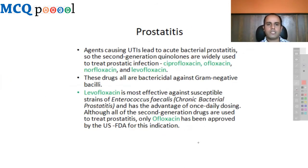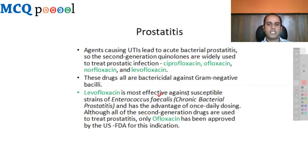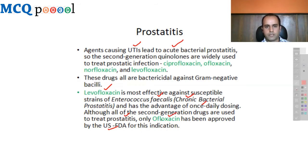The agents causing UTIs are the same agents that lead to acute bacterial prostatitis. Second-generation quinolones — ciprofloxacin, ofloxacin, norfloxacin, and levofloxacin — are widely used to treat prostatic infections and are bactericidal against gram-negative bacilli. Levofloxacin is most effective against susceptible strains of Enterococcus faecalis, which is implicated in chronic bacterial prostatitis, and can be given once daily. Although all second-generation agents can be used, the USFDA has approved only ofloxacin for prostatitis.